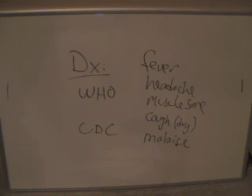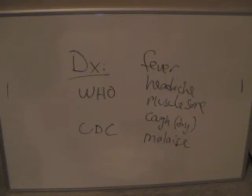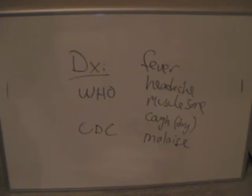According to the CDC, uncomplicated influenza illness is characterized by abrupt onset of constitutional and respiratory signs and symptoms — for example, fever, myalgia which is muscle aches, headache, malaise, non-productive cough, sore throat, and rhinitis which is runny nose. Among children, otitis media — which is an ear infection — as well as nausea and vomiting are also common. Uncomplicated influenza typically resolves after three to seven days, although cough and malaise can persist for more than two weeks.